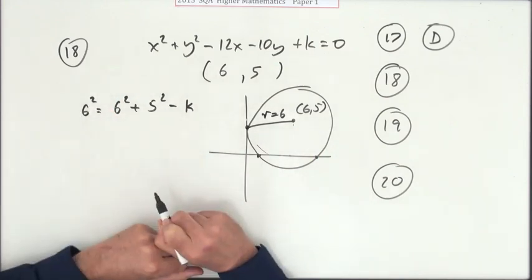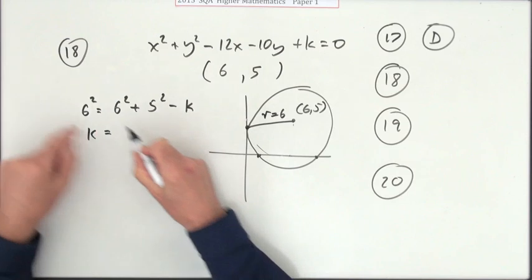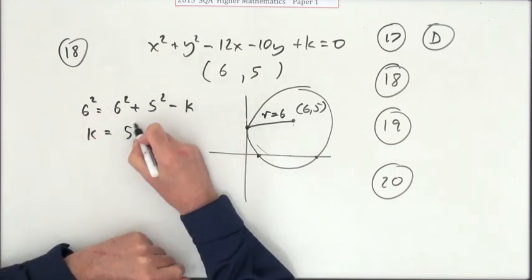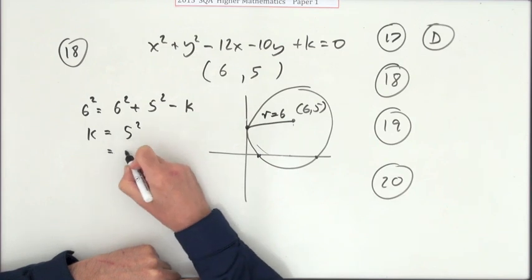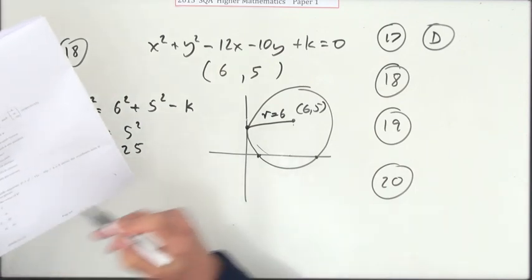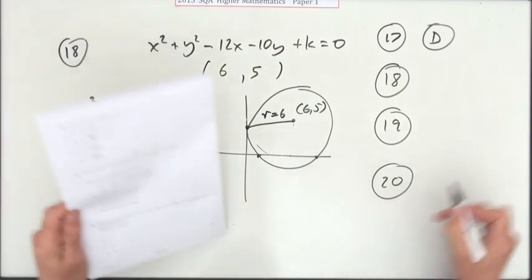Taking the k across, k is going to be—and taking the six squared over which will knock that out—k is going to be five squared, which means k is 25. And 25 is answer C.